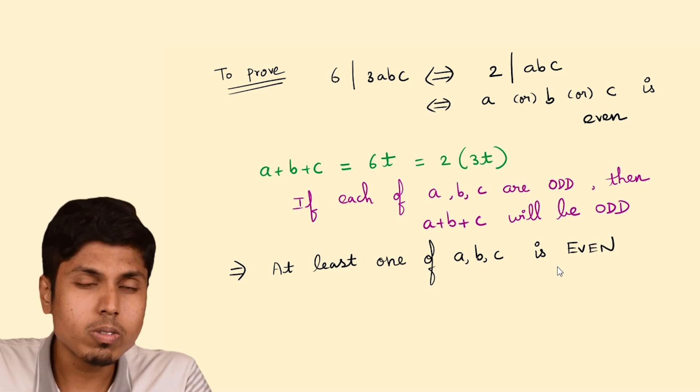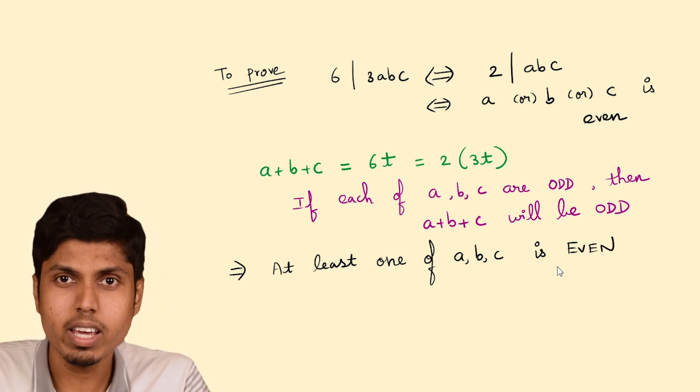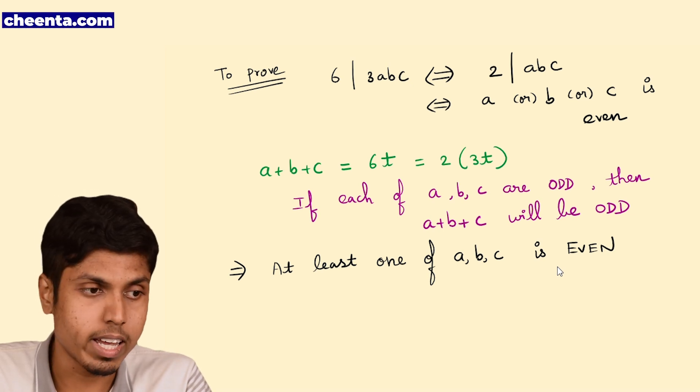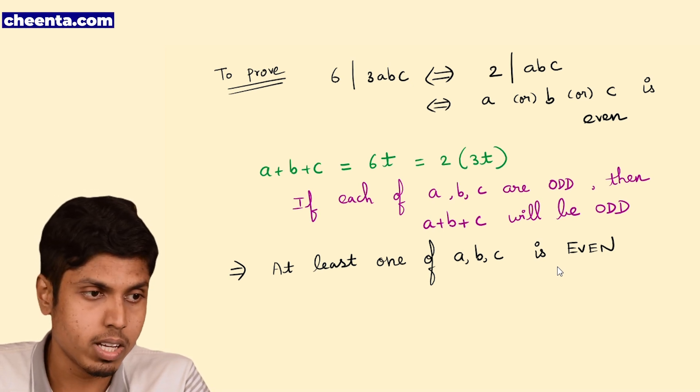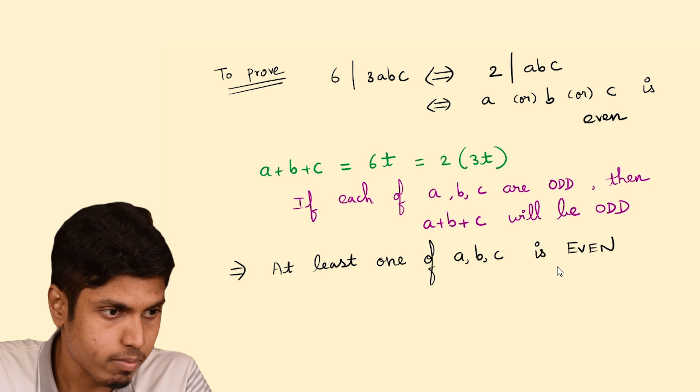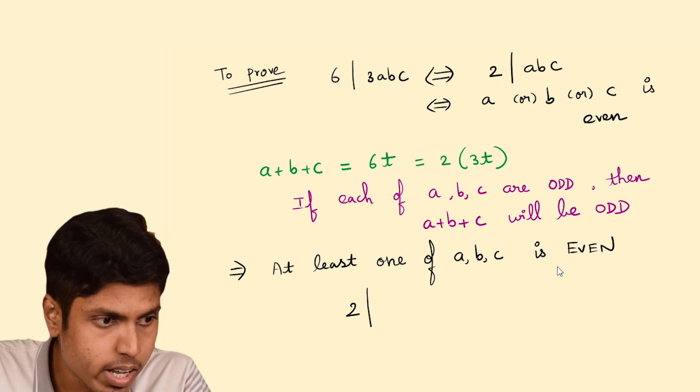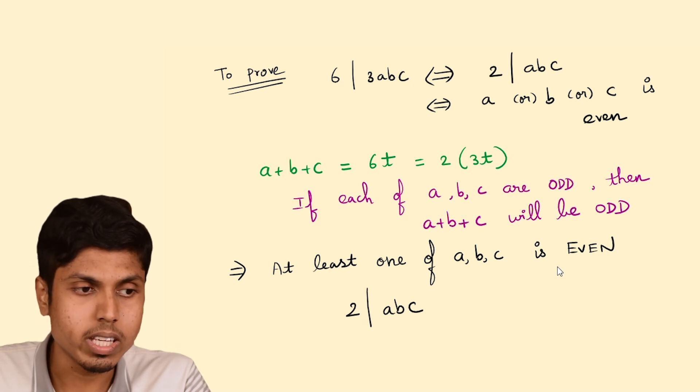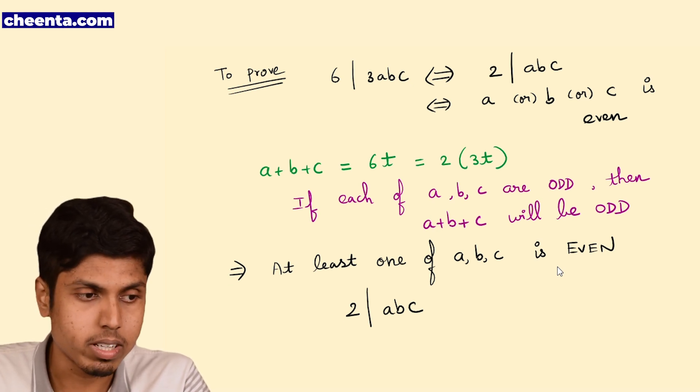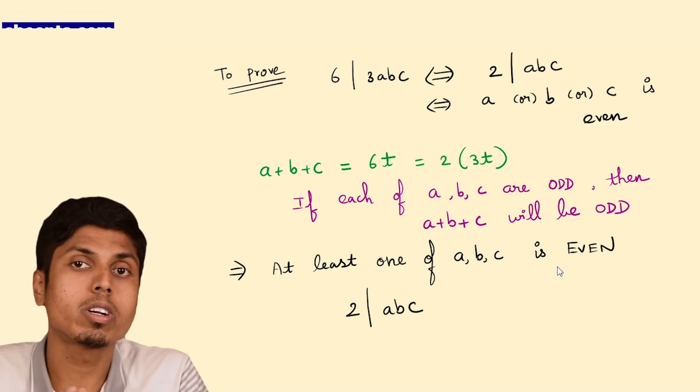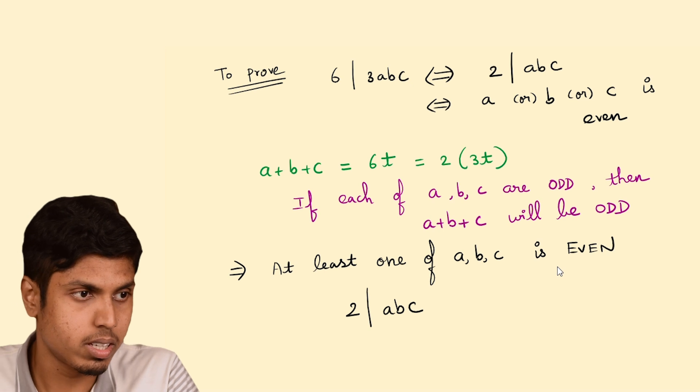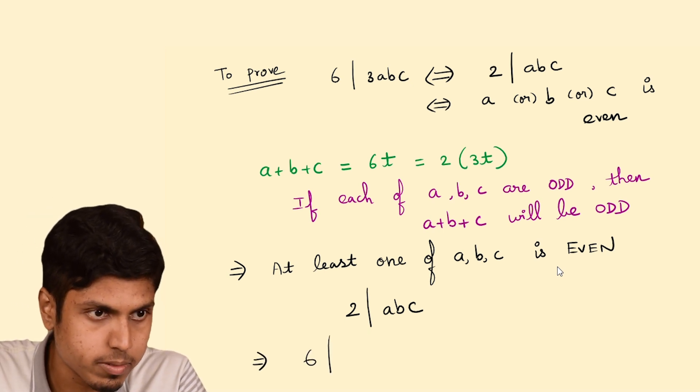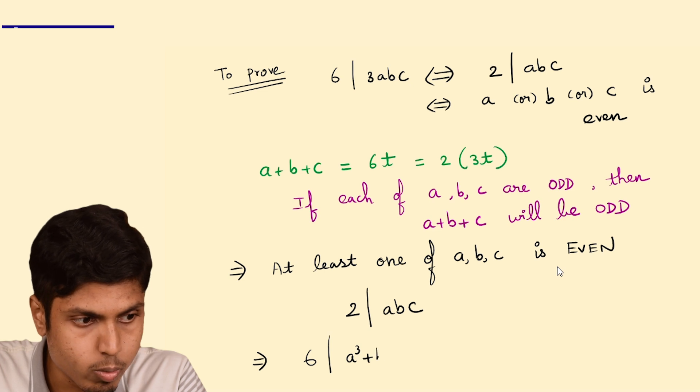So up to this much, we can definitely state it with proof. And now, clearly 2 divides ABC as A or B or C has to be even, 2 will divide the product of all 3 numbers. So thus we conclude that 6 divides A cubed plus B cubed plus C cubed.